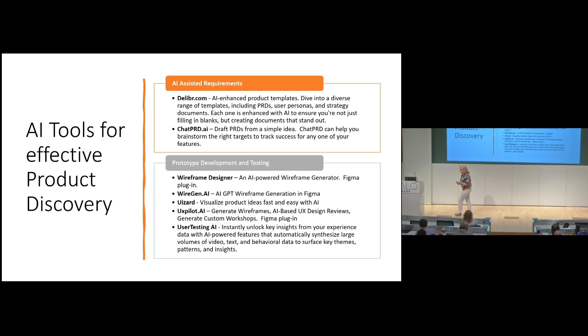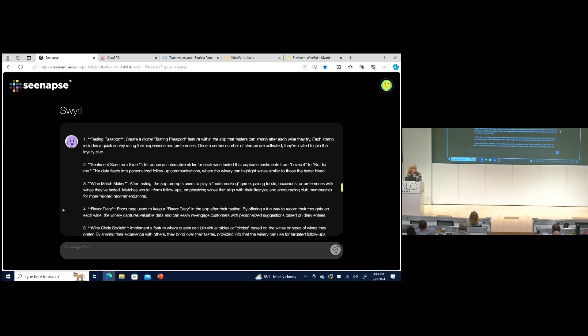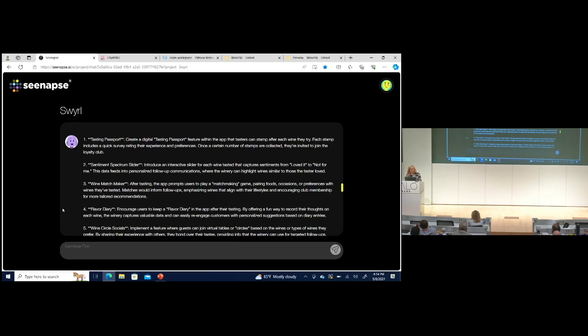So I'm going to actually switch screens and show you the results of some of these. This is an example of Synapse. I started this project called Swirl. I basically said wineries want a way to capture information of people who come into their tasting room so they can know what they liked and did not like, and so they can follow up to try to upsell them wine and ideally get them to join the loyalty club. This is right before happy hour, so you're going to see a theme here.